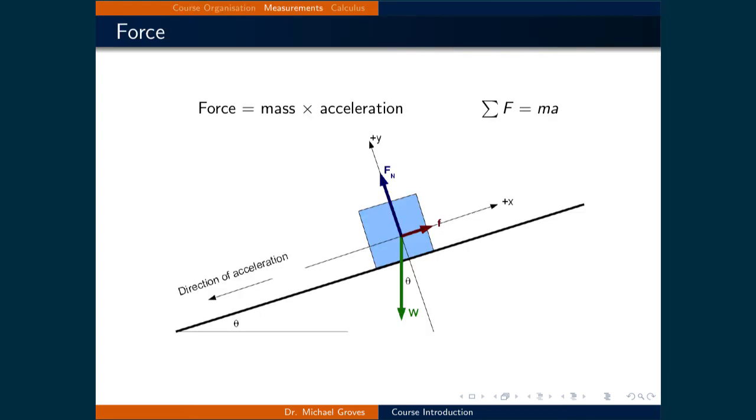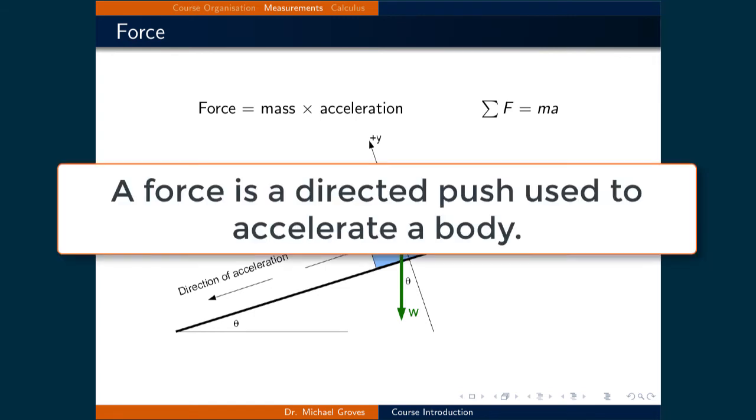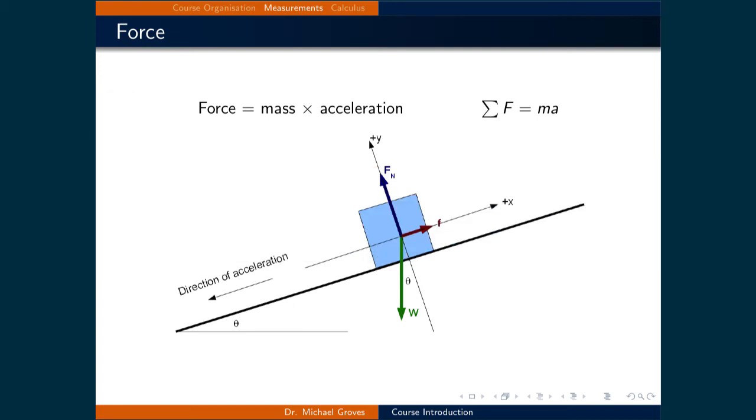Now, we will turn to fundamental measured quantities that will be used as a starting point to describe thermodynamic quantities. The first is force, which is a directed push used to accelerate a body. What is shown on the slide is Newton's second law, the sum of the forces are equal to the mass times the acceleration, and a typical free body diagram on a block on a ramp. We will not be solving these types of problems, but it illustrates some of the forces that act on everything in our macroscopic world.